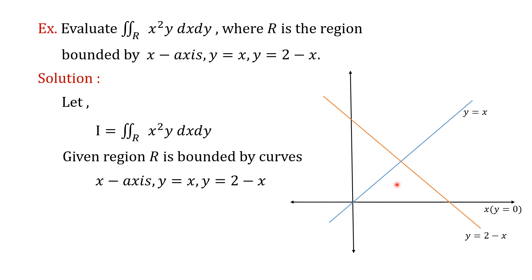We got only two bounded regions. The other two regions are not bounded. Out of the two bounded regions, we have to choose the correct one. If we consider the first region, it is bounded by the line y equal to x, the line y equal to 2 minus x, and the y-axis — but the given region is bounded by the x-axis, so this is not the required region. Hence, we go to the second region, which is bounded by the line y equal to x, the line y equal to 2 minus x, and the x-axis. This is the required region.